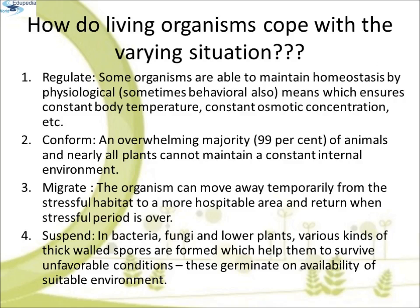The fourth strategy is to suspend. In bacteria, fungi and lower plants, various kinds of thick-walled spores are formed which help them survive unfavorable conditions and germinate when a suitable environment becomes available. In higher plants, seeds and some other vegetative reproductive structures serve as means to tide over periods of stress, germinating under favorable moisture and temperature conditions, by reducing metabolic activity and going into a state of dormancy. In animals, if unable to migrate, the organism might avoid stress by escaping in time — bears going into hibernation during winter is a familiar example. Some snails and fish go into estivation to avoid summer heat and desiccation. Under favorable conditions, many zooplankton species in lakes and ponds are known to enter diapause, a stage of suspended development.